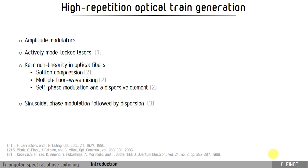There are different ways to generate high repetition rate optical pulse trains. Here, we target repetition rates of a few tens of Gigahertz, and we can use amplitude modulators, actively mode-locked lasers,